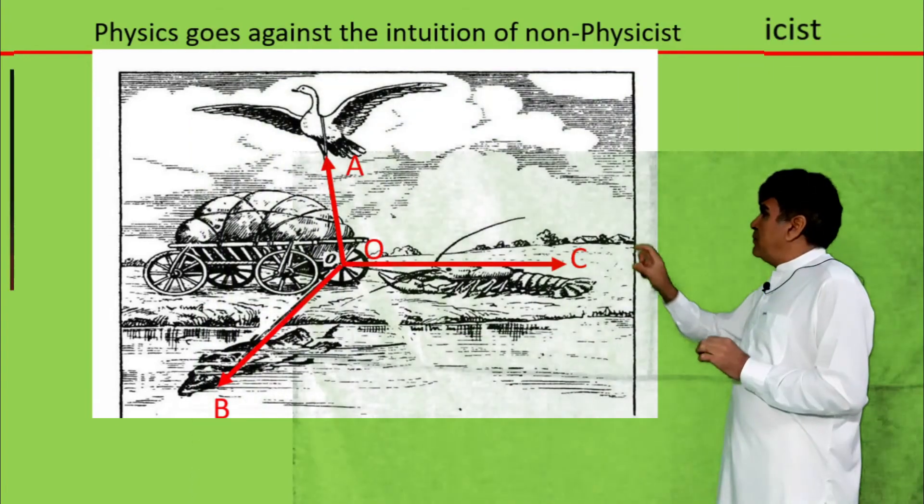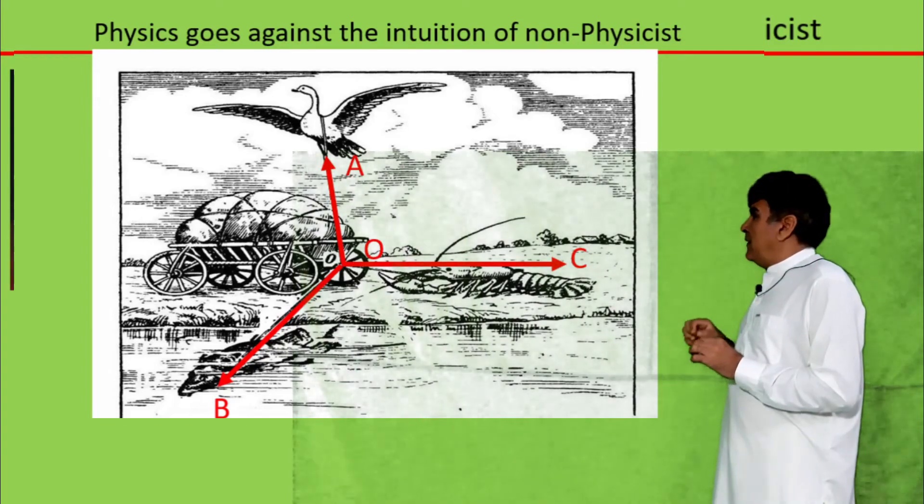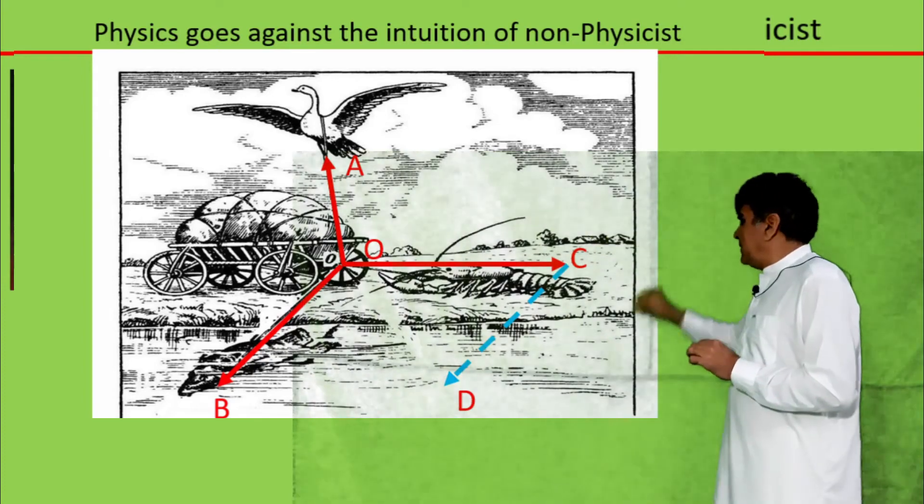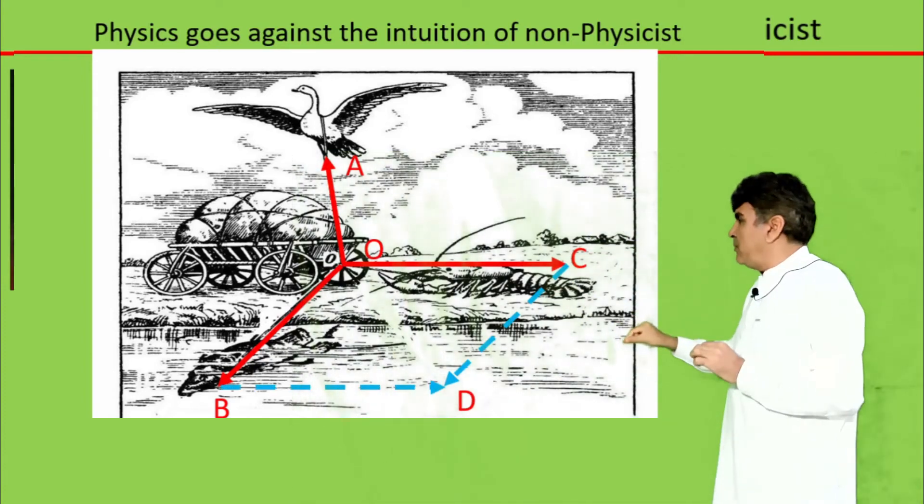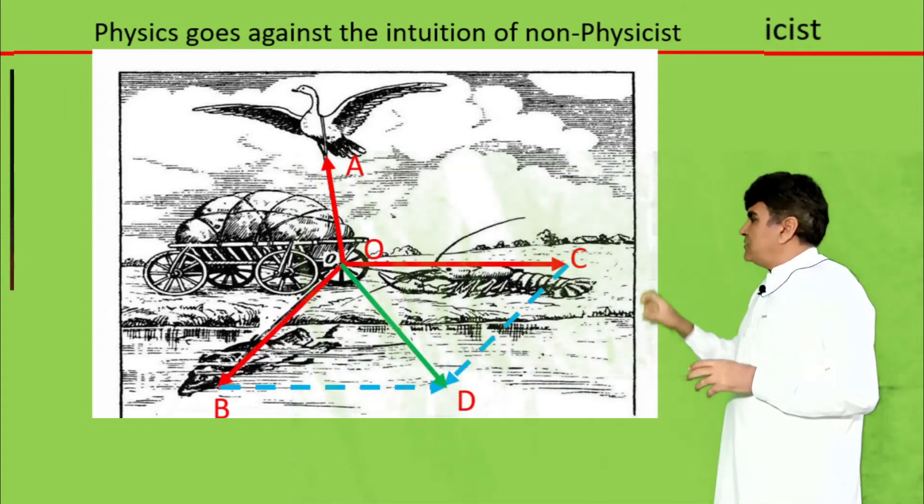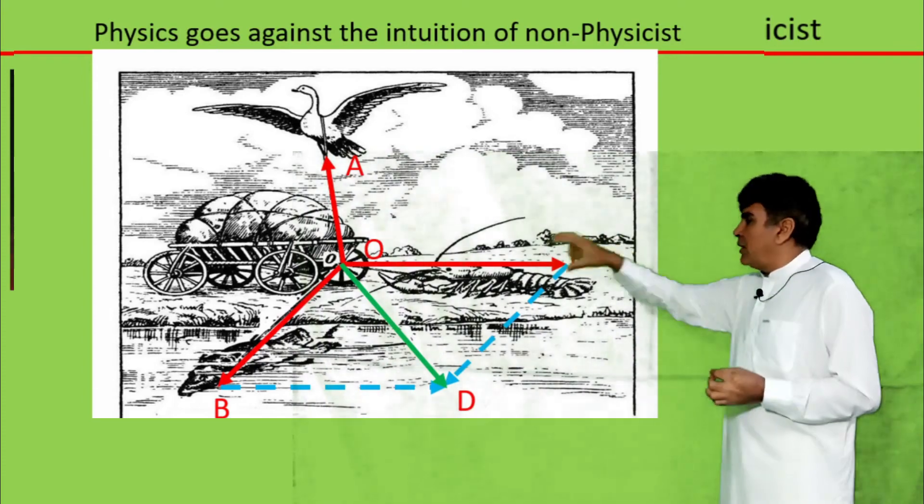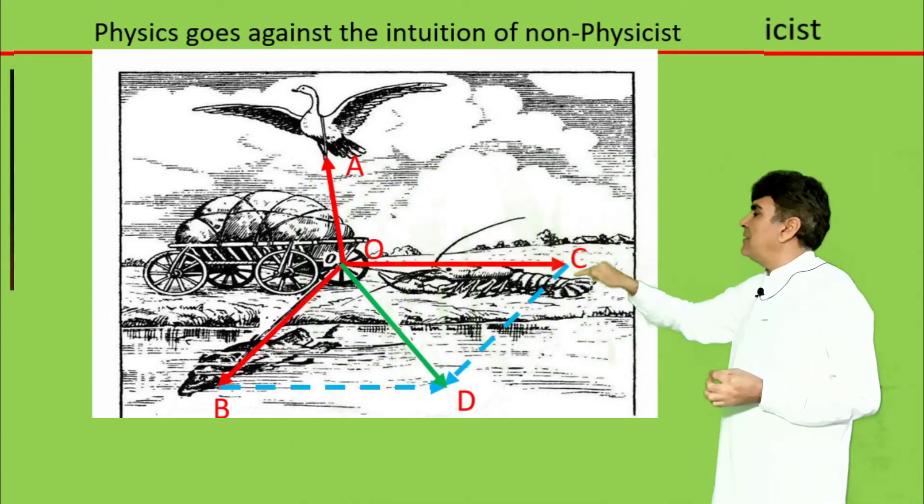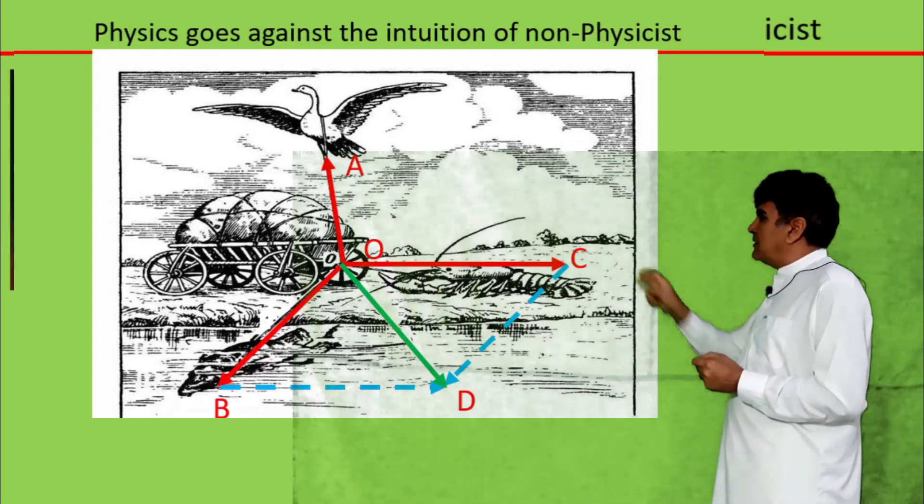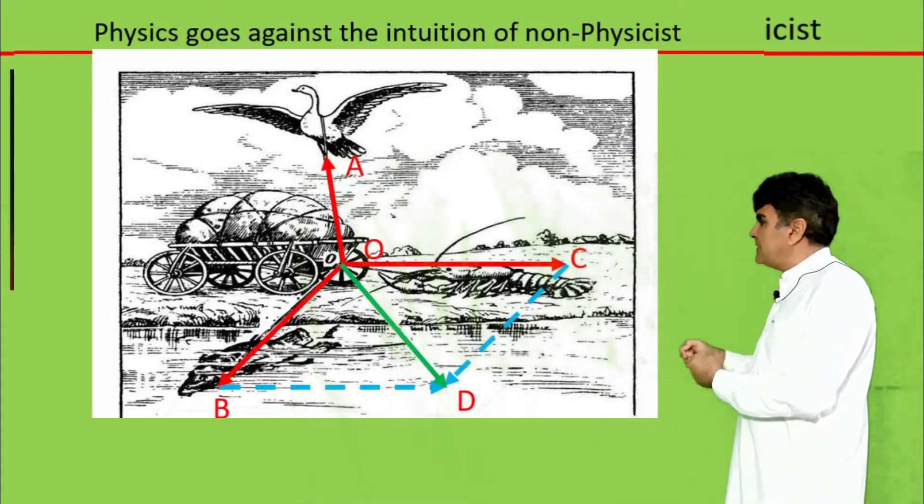The resultant of OC and OB can be obtained by head to tail rule. That is, I can add OB to OC, or I can add OC to OB, and obtain the resultant vector OD, whose magnitude and direction depend on the magnitudes of OC and OB along with the angle between the two. It is well obvious from this vector addition that the cart will move in the direction of OD, which points towards the river.